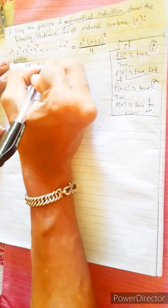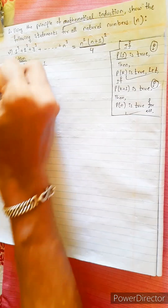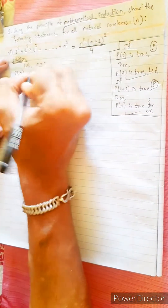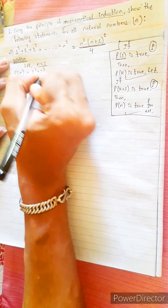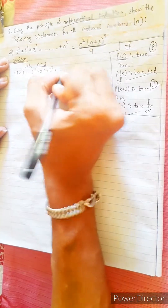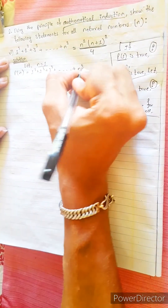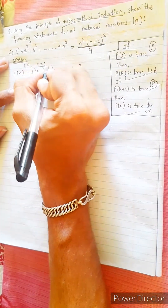Let n equal to 1. Let n equal to 1: 1 cubed plus 2 cubed plus 3 cubed plus dot dot dot plus n cubed. n equals to 1.